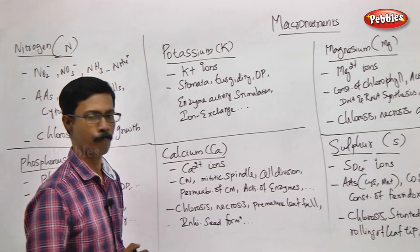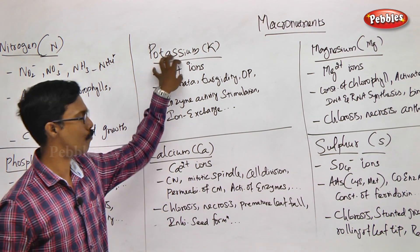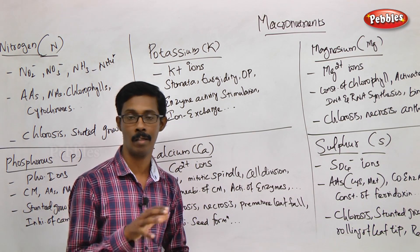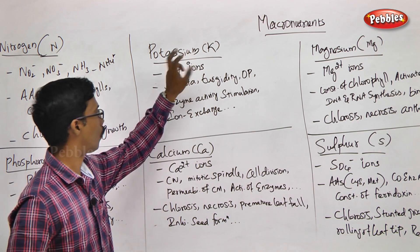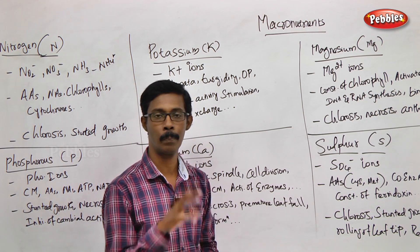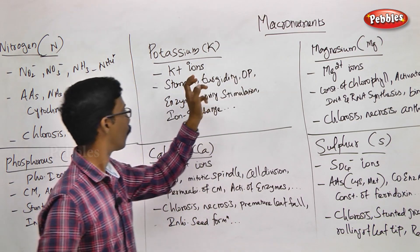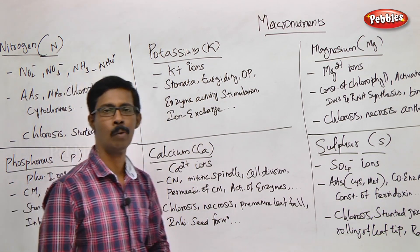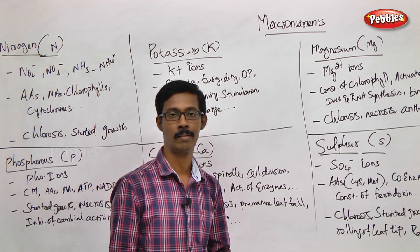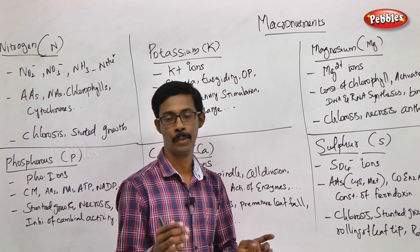Now we will look at the next mineral: potassium. Potassium is absorbed in the form of K⁺ ions. Potassium is always related to the movement of water — osmotic potential and turgor pressure. If a cell has high K⁺ ion concentration, osmotic pressure increases, maintaining turgidity. This is why stomata opening and closing involves K⁺ ions: when K⁺ ions enter guard cells, tonicity increases, water follows by osmosis, and guard cells expand, opening the stomata.